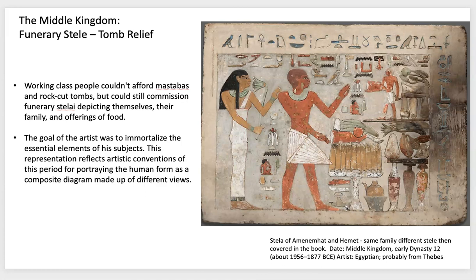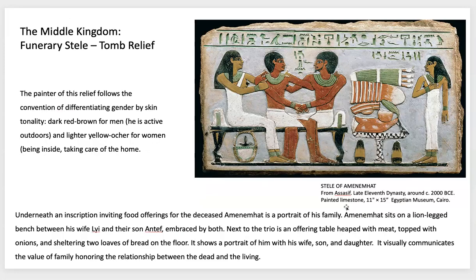Here are some examples of tomb reliefs. A lot of working-class people who couldn't afford mastabas or cut rock tombs might commission a funerary stele — a small acknowledgement of the family and life of the person in the tomb. If they used the artistic conventions, that symbolized higher class. Another famous example from your reading shows the relationship and importance of family and food — perhaps a merchant who had a portrait of his family, showing the wealth with food and the love they're sharing.